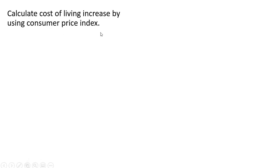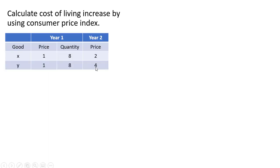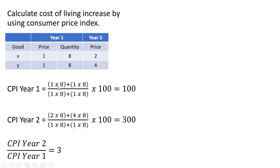Let's calculate the cost of living increase using the Consumer Price Index. In year one, the prices are one and one for each good, and the consumer bought eight units of good X and eight units of good Y. The CPI in year one is the current cost of the fixed basket — one times eight plus one times eight — divided by the base year cost, one times eight plus one times eight, multiplied by 100, giving a CPI of 100.